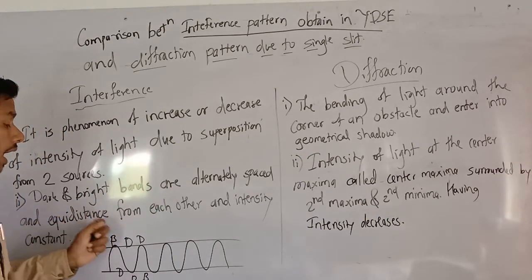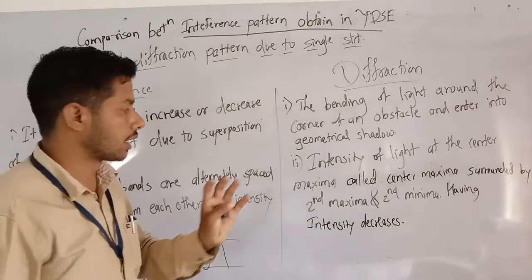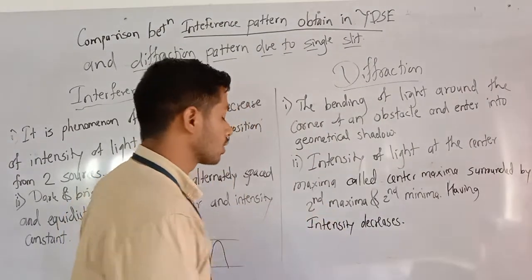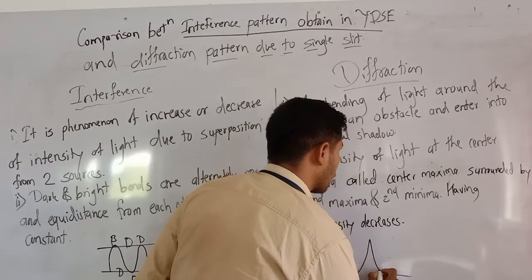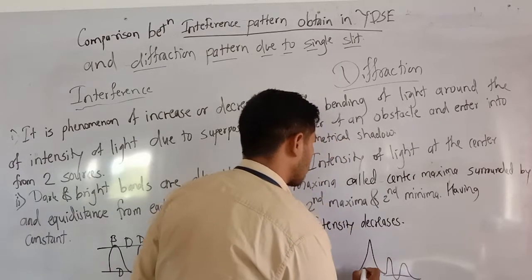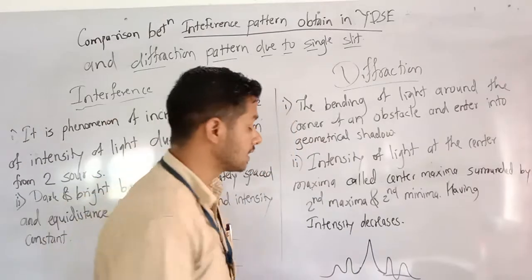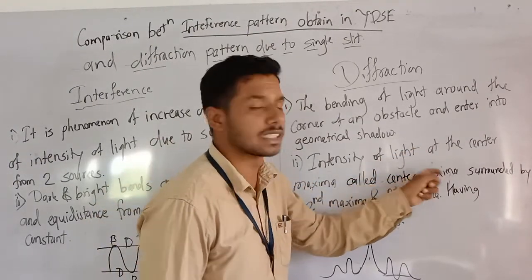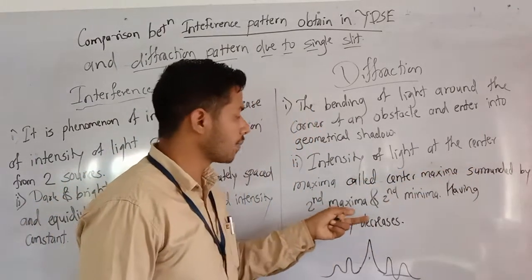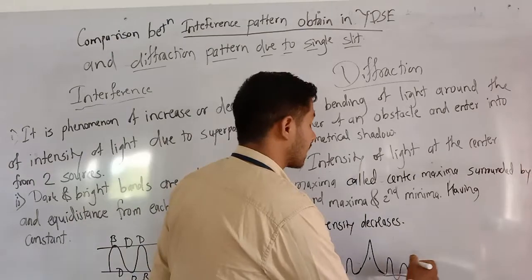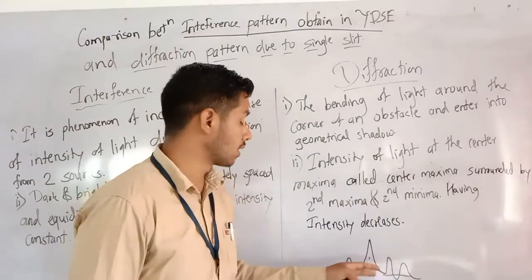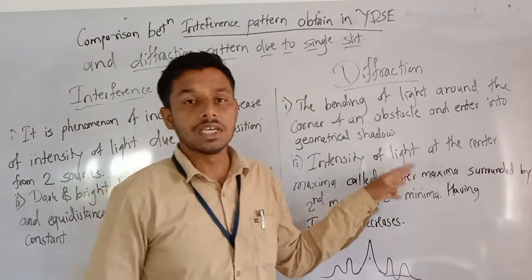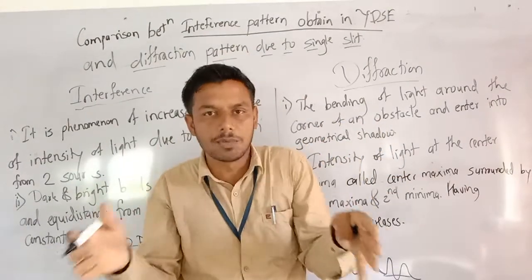In the diffraction pattern, the intensity of light at the center is maximum — this is called the central maximum. It is surrounded by secondary maxima and secondary minima, then third maximum and third minimum, and so on. The intensity of the central maximum is the highest and decreases for successive secondary maxima.